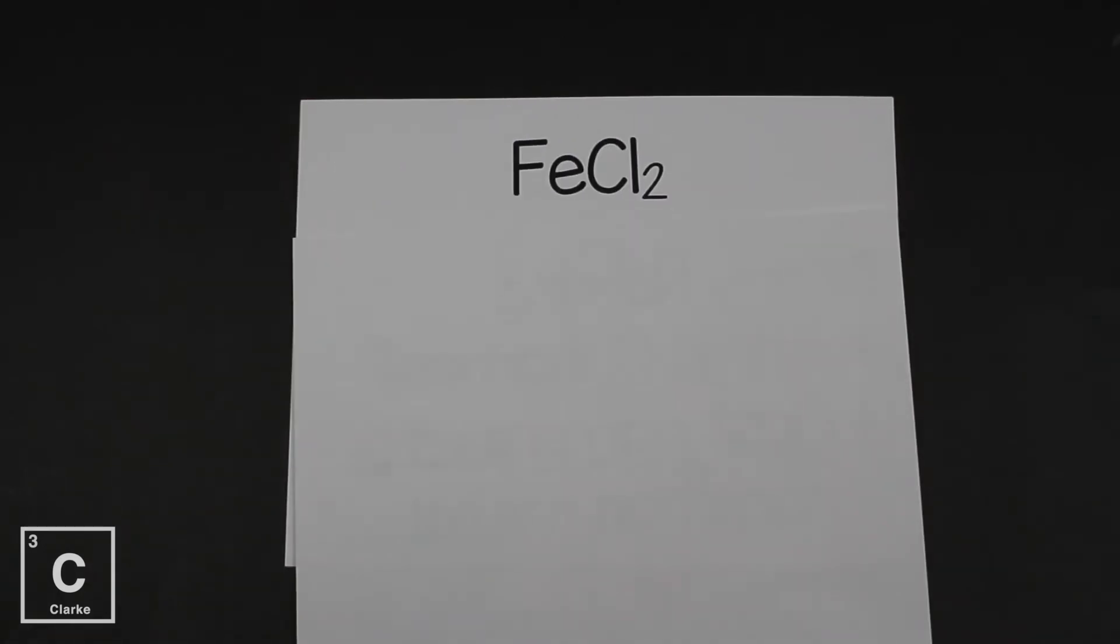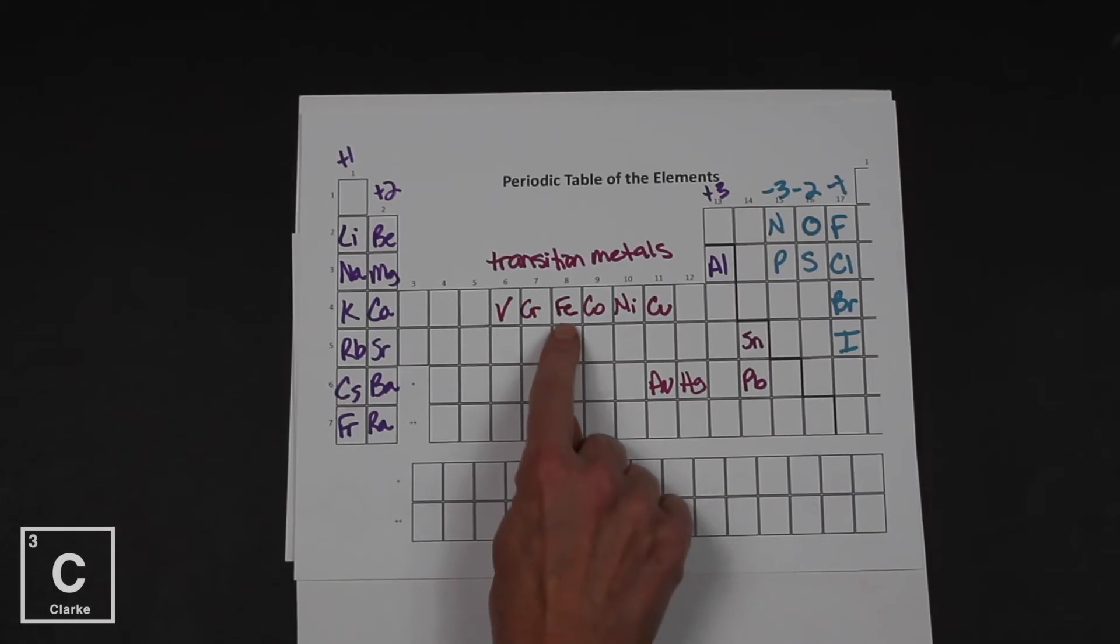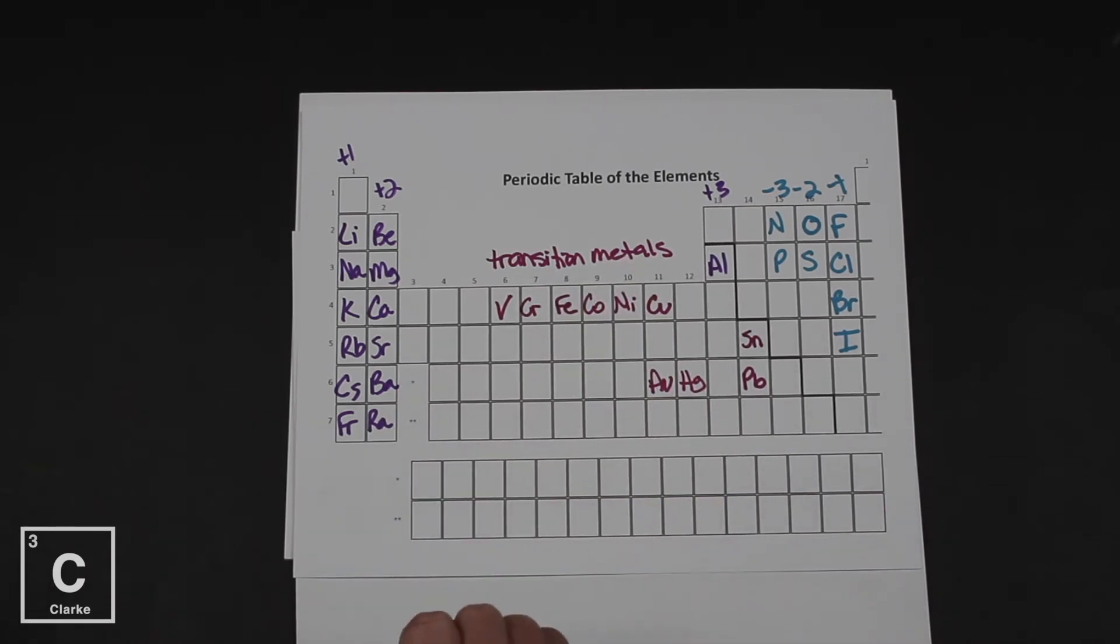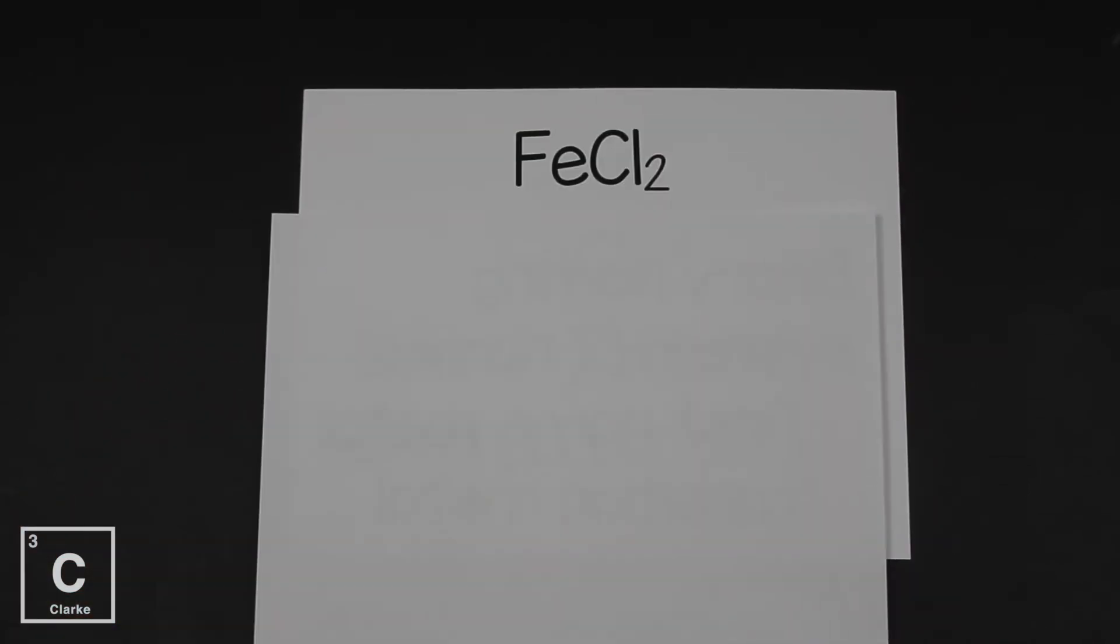We have FeCl2. Fe, that's iron. It's a transition metal. We're going to need a Roman numeral. When we're using transition metals, you always have to identify the charge of the transition metal. We don't know iron's charge just by looking at the periodic table because it's a transition metal. But we can use chlorine to help because remember for it to be an ionic compound, it must be neutral. So whatever chlorine's charge is, iron's charge must cancel that out.